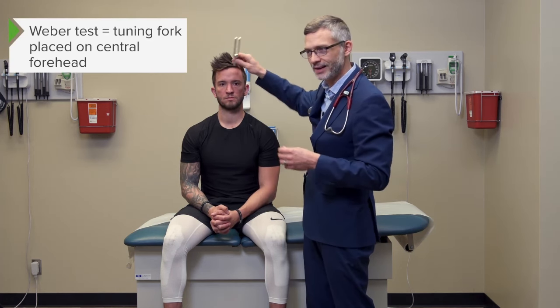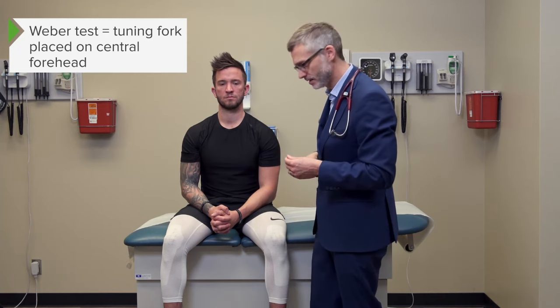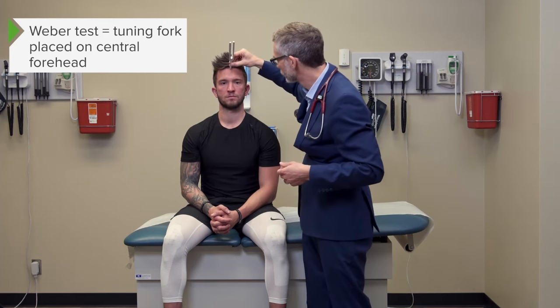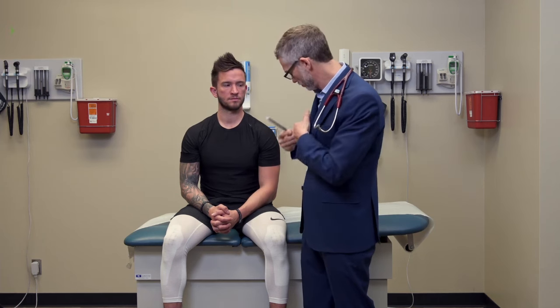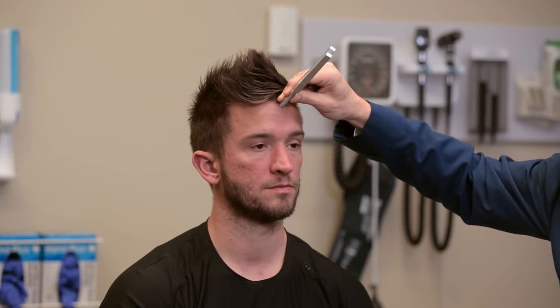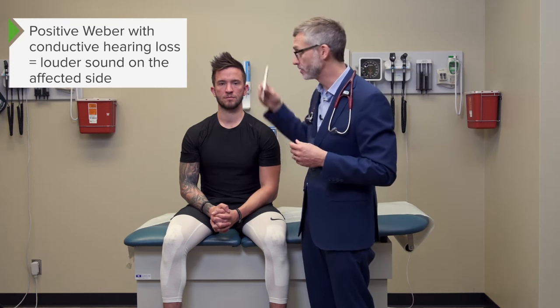I always remember which one is the Weber test because Weber starts with a W — a symmetric letter — so I can remember I'm starting in the middle of his forehead. We'll do that now by making a loud sound. Which side do you hear that the most on, or is it pretty much the same? He hears it in both. So if he had conductive hearing loss — say his left ear was completely full of cerumen — his cochlear nerve on the left would be starving for information and would amplify its sensitivity, so he would lateralize to the left when I put the fork on his forehead.